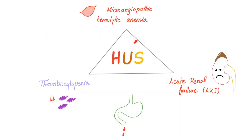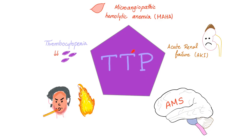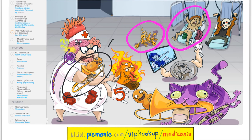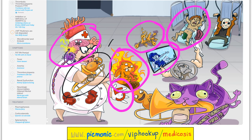To summarize: HUS was a triad of microangiopathic hemolytic anemia, thrombocytopenia, and acute renal failure. However, thrombotic thrombocytopenic purpura is a pentad — five things: microangiopathic hemolytic anemia, thrombocytopenia, acute renal failure, fever, and neurological symptoms such as altered mental status. In TTP there is a problem with ADAMTS13, leading to microthrombi. Treatment is plasmapheresis and corticosteroids.